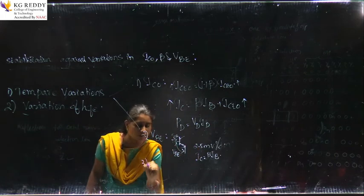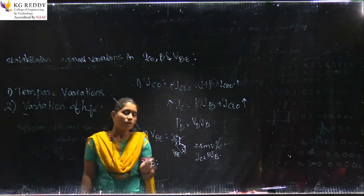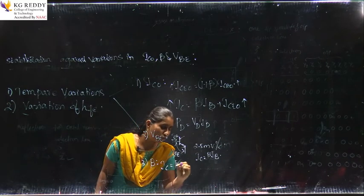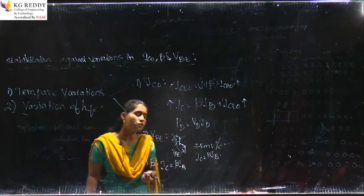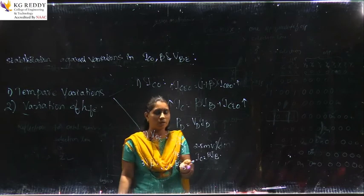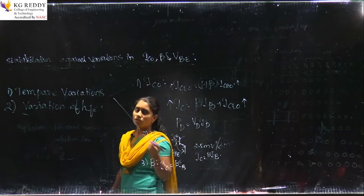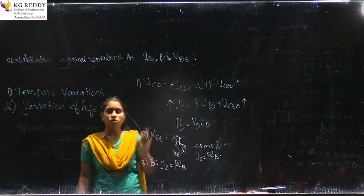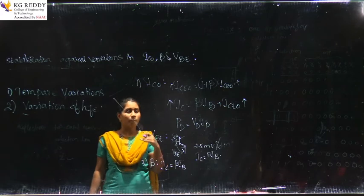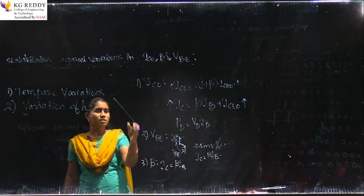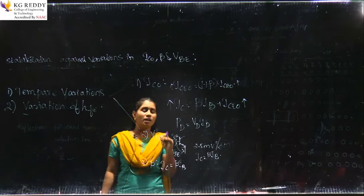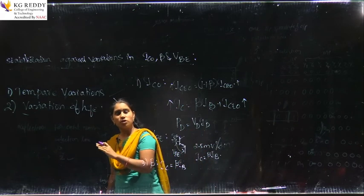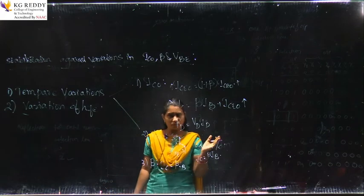The third transistor parameter is beta. We already know that Ic is directly dependent on the base current, so Ic equals beta·IB. Normally, if beta changes, the collector current would change, and this will shift the operating point. So these are the three transistor parameters — Ic0, Vbe, and beta — which change when temperature changes, affecting the operating point and moving it into either the saturation or cutoff region.